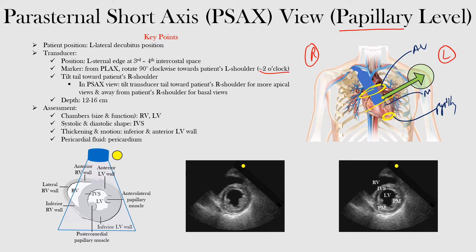In between may be that mitral valve level — so those are the three levels we've looked at. Now, if we want to look at more of a basal view, we're going to move the transducer or tilt it away from the patient's right shoulder — in other words, towards this way. If we want to look at more of a papillary level, we're going to move it towards the patient's right shoulder to look at more of an apical portion.